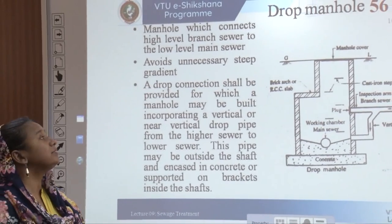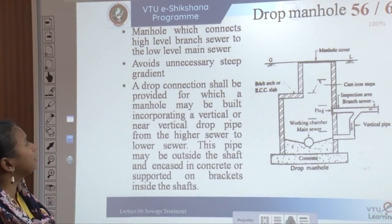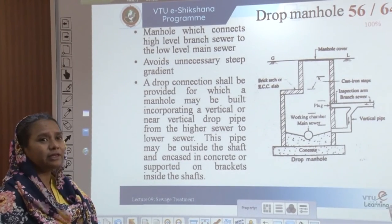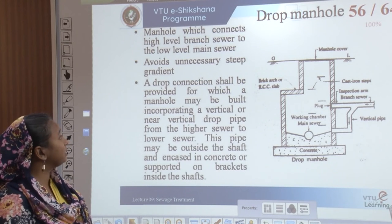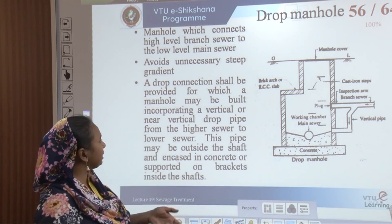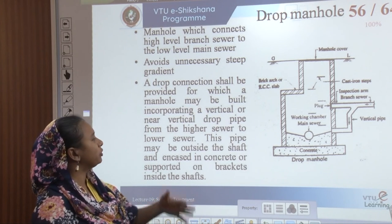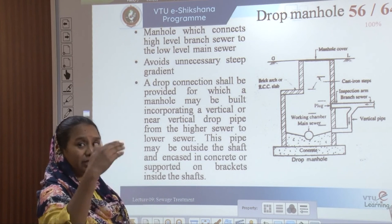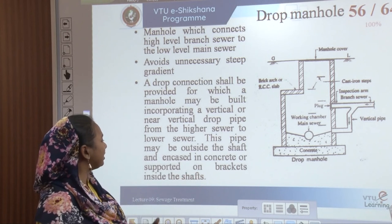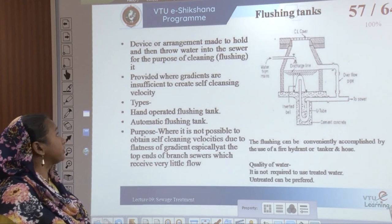A drop manhole is similar to a manhole but connects higher-level branch sewers to lower-level main sewers. It avoids unnecessary steep gradients. A drop connection is provided where a manhole is built at a vertical or near-vertical drop pipe from the highest sewer to the lowest sewer. For apartment buildings with pipelines running vertically from top to the lowest space, this is provided outside the shaft and encased in concrete or supported on brackets inside the shaft.